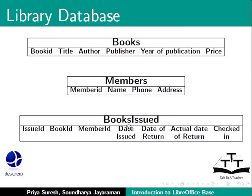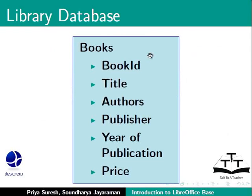Now let us see how we can store this data as individual tables of rows and columns. Information about each book can be stored in a books table, with its attributes becoming the columns: book title, author, publisher, year of publication, and price. To distinguish each book, we also add a unique identifier column called Book ID. This way we can have two completely different books with the same title.